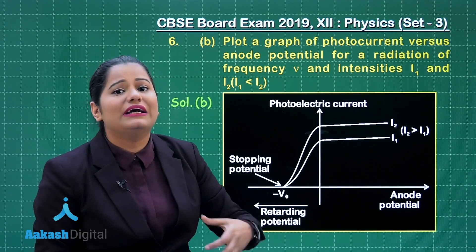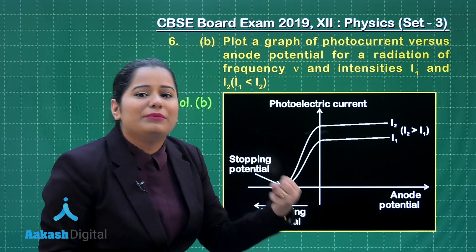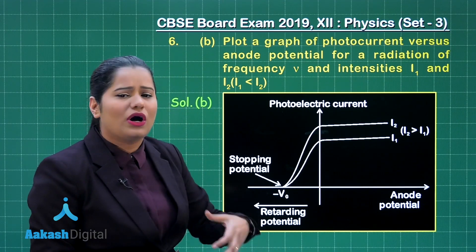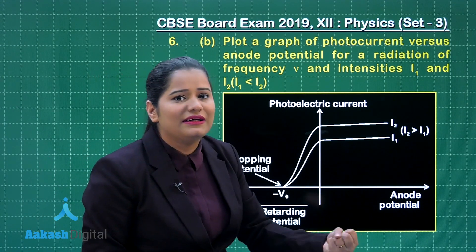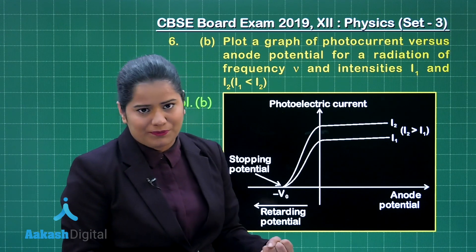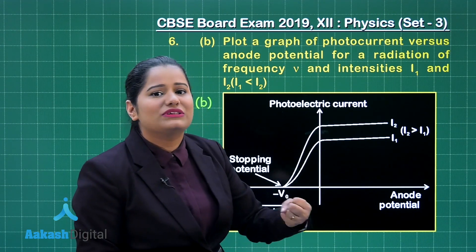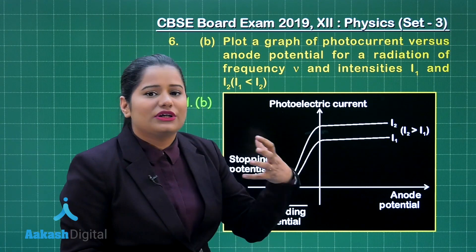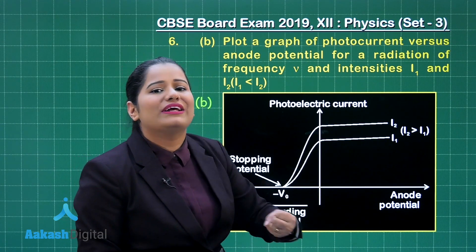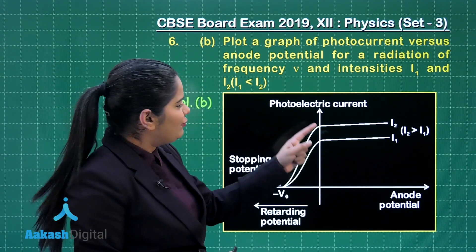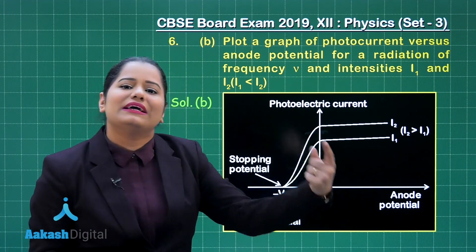Photoelectric current depends on the number of emission of electrons, how many electrons are emitted by the metallic surface. So if you will increase the intensity as more photons are striking the surface, there is going to be the emission of more electrons and hence the photoelectric current is going to increase.